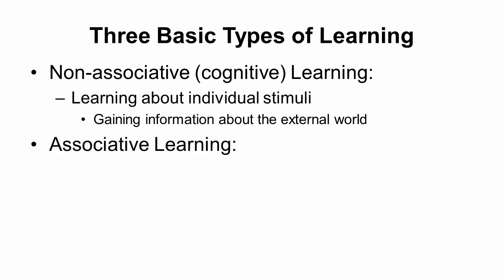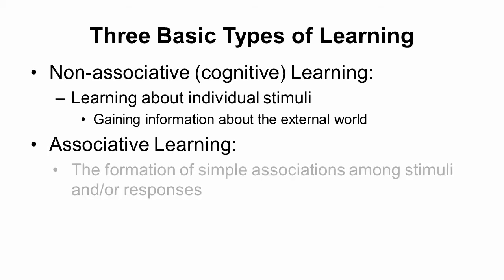Then you have associative learning, which we're going to talk about in a lot of detail in the next couple videos. There's two basic kinds of associative learning, but with both of them, you're just learning about how stimuli are related to each other or how certain behaviors can result in certain kinds of stimuli being produced.